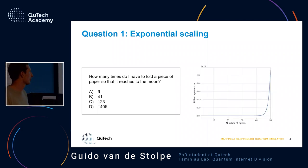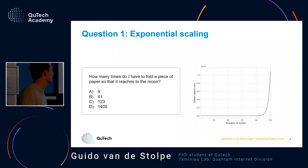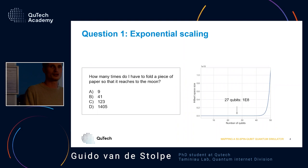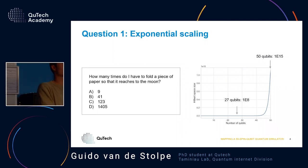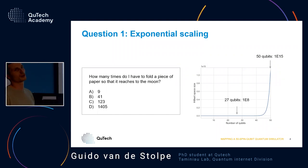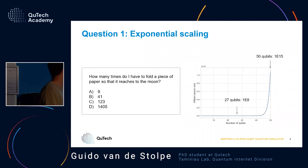In that context I also want to present the main result of this work, which is that we had a quantum simulator where we had access to 27 qubits, and this work really focused on extending this number to 50 qubits. On the y-axis I plot the Hilbert space size, which is a measure for the complexity this quantum simulator can access — you can really see orders of magnitude increase, since every qubit doubles the Hilbert space.